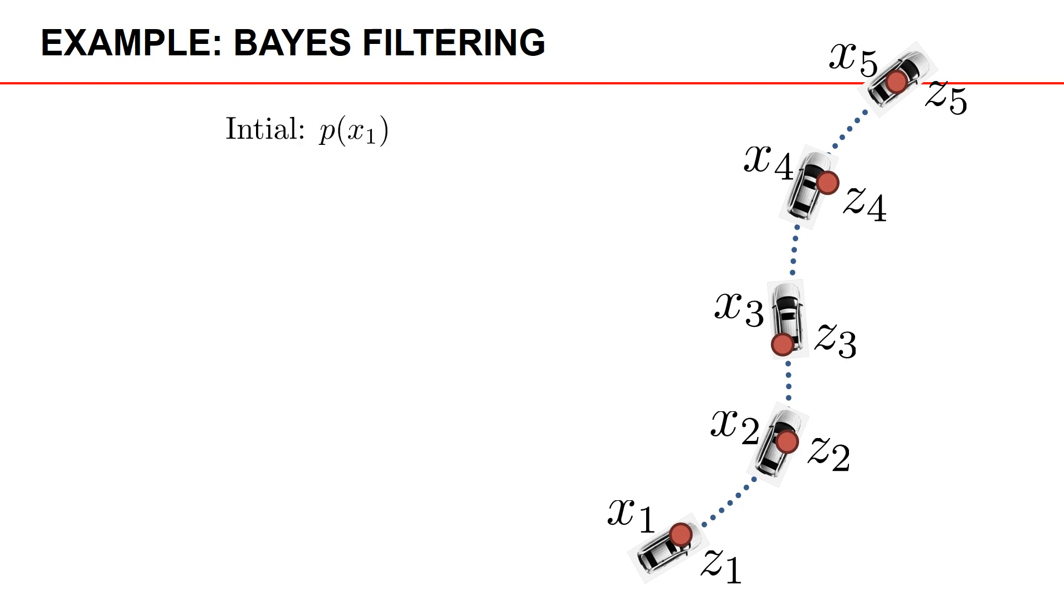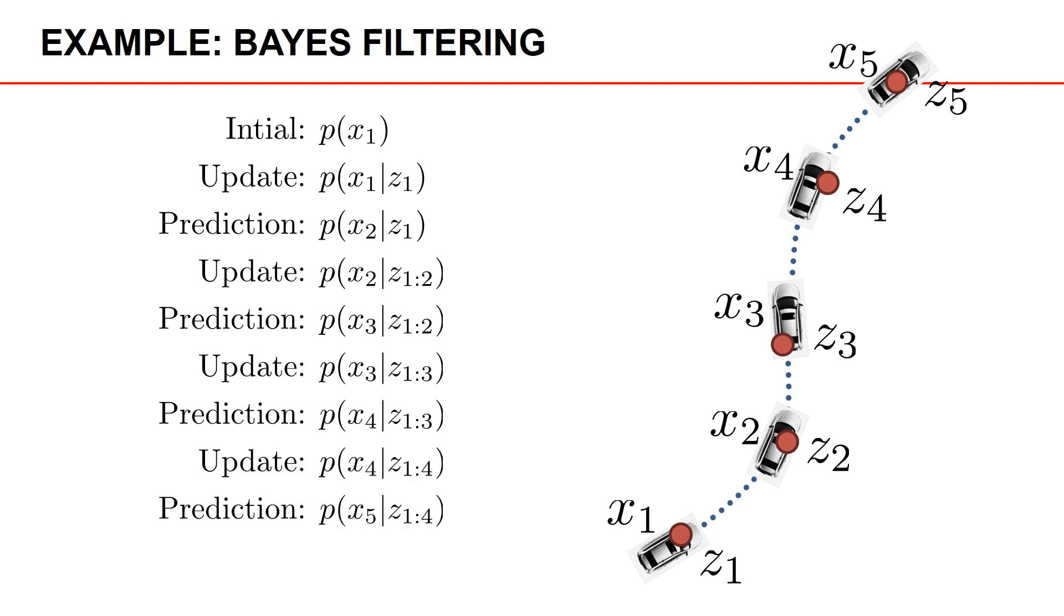We start with some initial density p(x₁). Then we get a first measurement, so we do a measurement update and get p(x₁|z₁). Now we can do a prediction to the next time step and get p(x₂|z₁). We do a measurement update again, so we get p(x₂|z₁,z₂), and we then continue this procedure. We iterate the prediction and the update, so that we get a sequence of posterior densities for the object state given the measurements.